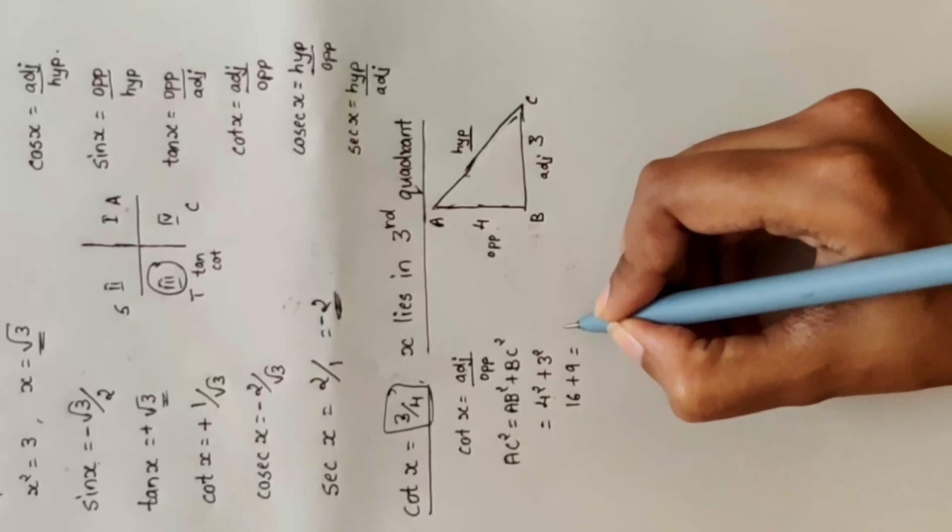Let's solve one more question. Sec x = 13 divided by 5, where x lies in the 4th quadrant. Sec x = hypotenuse divided by adjacent. So draw a triangle: adjacent is 5, hypotenuse is 13, and find the opposite.